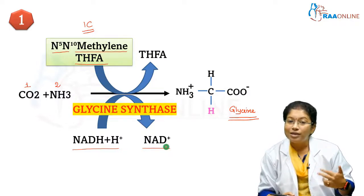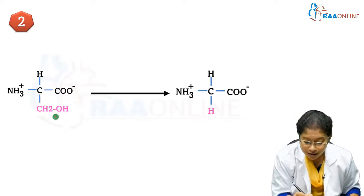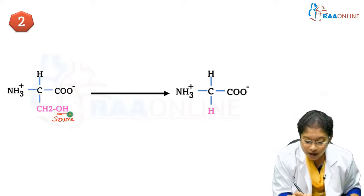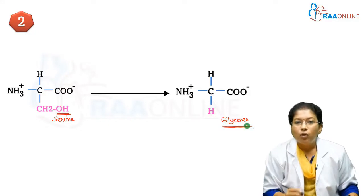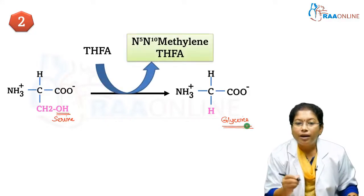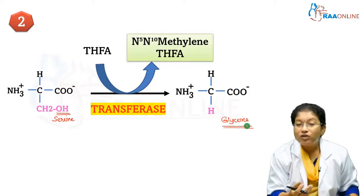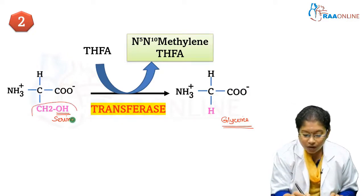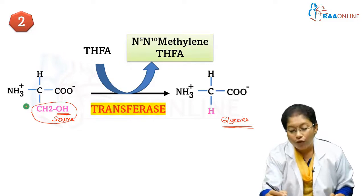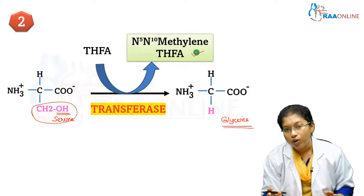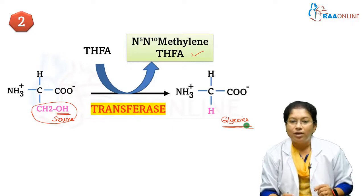The second synthesis route is from serine, a hydroxyl group-containing amino acid. Here, a methylene group is removed from serine and transferred to tetrahydrofolic acid, converting it to N5,N10-methylene tetrahydrofolic acid. The resulting product is glycine. The enzyme responsible for this transfer is a transferase.